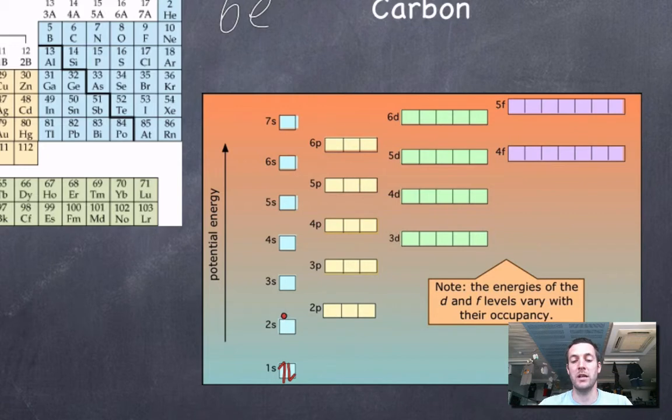Next electron is going to go into 2s. Again there's an energy barrier here that stops me from going, oh well I don't want to be paired up, I'm just going to have to swallow it and pair up in there because the energy difference is too big. I've used four electrons. Now I've got orbitals that are all the same energy, so I can choose as an electron to not pair up, so I'm going into a different orbital.